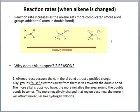Why is it that when alkenes get larger and more alkyl groups are present, the rate of reaction also increases? There are two reasons. The first reason is that alkyl groups push electrons away from themselves towards the double bond. Therefore, the more alkyl groups present, the more negative the region around the double bond becomes. The more negatively charged the region, the more it attracts electrophiles like hydrogen chloride, which are attracted to regions of negative charge.